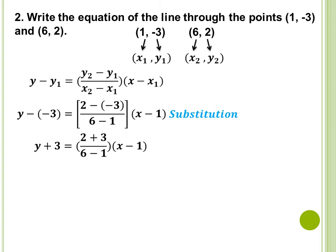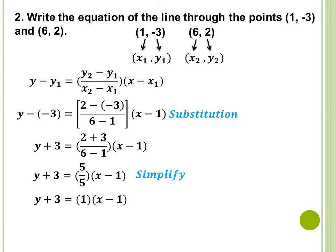Let us just simplify. 2 plus 3 will be 5. 6 minus 1, magiging 5 din. That is by simplifying — 5 over 5 is also equal to 1. So, magiging y plus 3 is equal to 1 times (x minus 1). Dito sa part na ito, we need to multiply 1 to (x minus 1) using distributive property of equality — we need to distribute 1 to (x minus 1). The same process as the first example: this will be 1 times x and then 1 times negative 1. Magiging y plus 3 is equal to x minus 1.